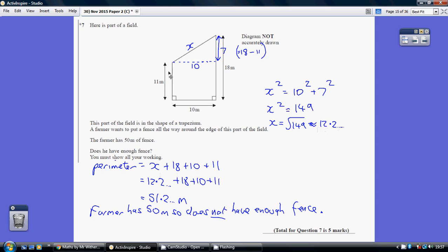So the total length around this field is 12.2 plus 18 plus 10 plus 11, which is about 51.2 meters. The farmer has 50 meters of fence, so no, he does not have enough fence. Yes he does.